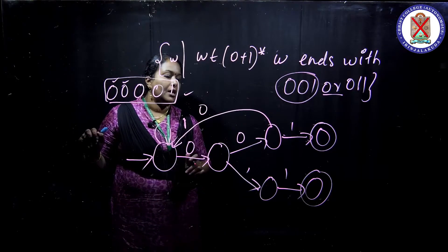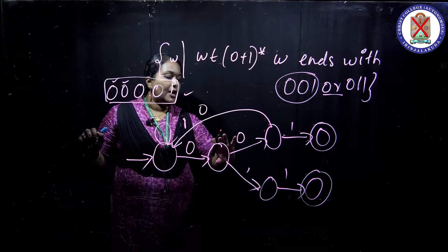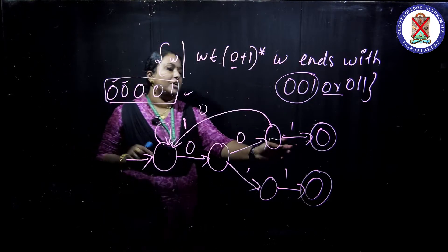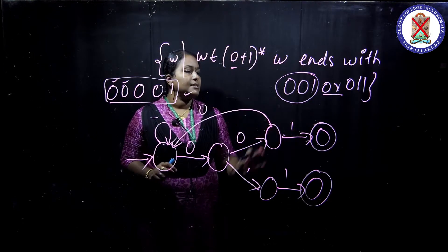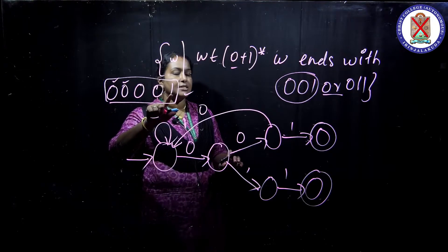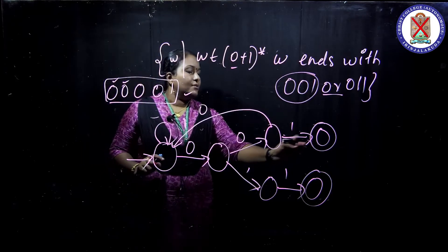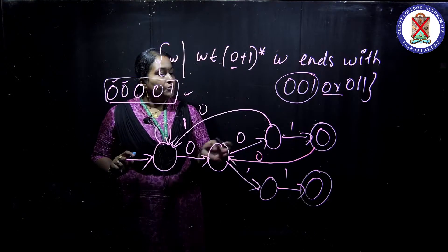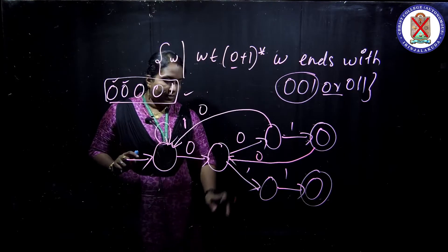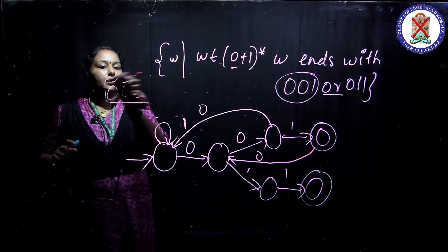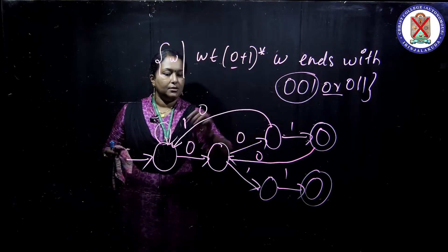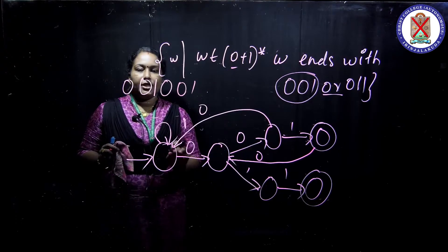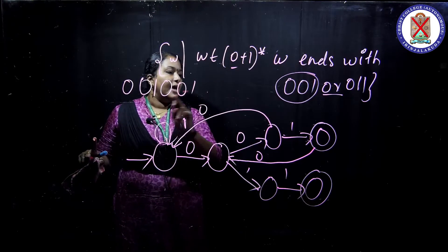So when 0 comes, we come here; when 1 comes, we already have that transition. For this state I have marked 0 going here and 1 going here — it is deterministic. Let me write a string: 0, 1, 0, 0, 1. Check it: for 0 I move here, again 0 I move here, again 1 I move here, again 0 — so again 0 I move here, again 0 I move here, and for 1 I move to the accepting state.